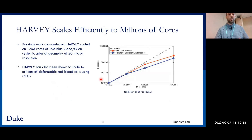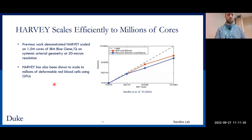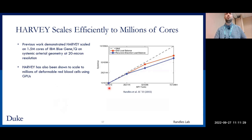To put that into context, Harvey in 2015 was a Gordon Bell finalist for work on the IBM Blue Gene Q, scaling to one and a half million cores on the full human systemic arterial geometry at 20 micron grid resolution. Harvey has also been shown to scale to millions of deformable red blood cells using GPUs on the Summit supercomputer — about 17 million red blood cells simulated at a physiological hematocrit mimicking the human body.